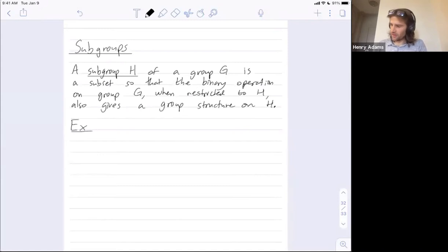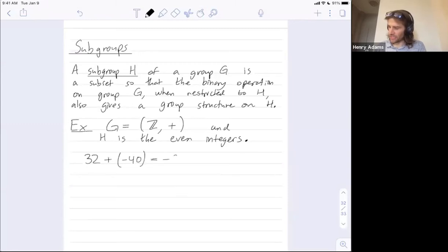So let me give some examples. G will be the integers, and maybe I'll specify under addition. And H is the even integers. So the point is, whenever you take two even integers and you add them, you still get another even integer. And so this group operation on all integers, when you only allow the inputs to be even, you still get a group structure on the even integers.